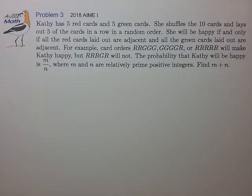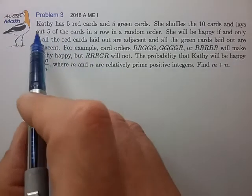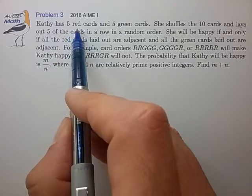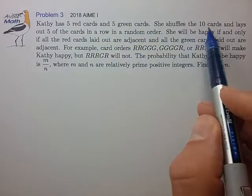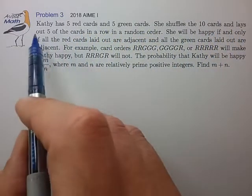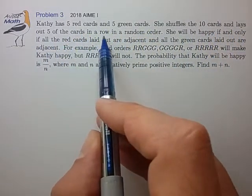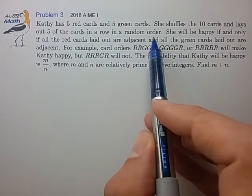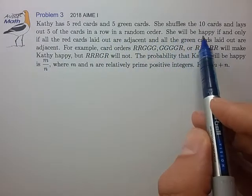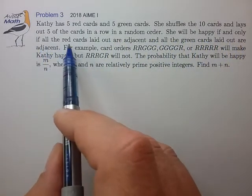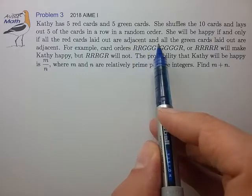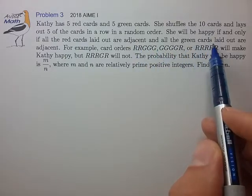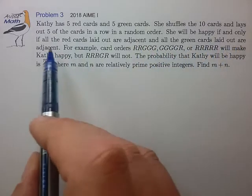Hi, this is Problem 3 from the 2018 AMC. Kathy has 5 red cards and 5 green cards. She shuffles the 10 cards and lays out 5 of the cards in a row in a random order. She will be happy if and only if all of the red cards laid out are adjacent and all of the green cards laid out are also adjacent.